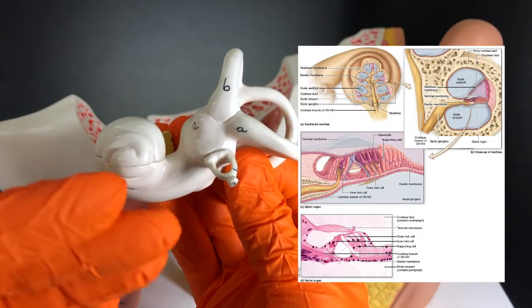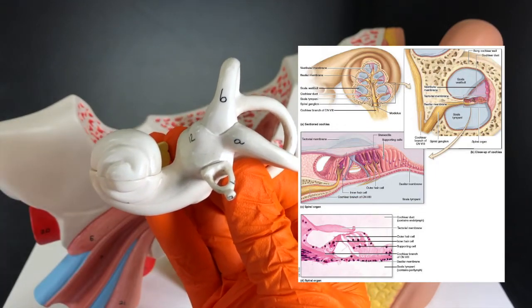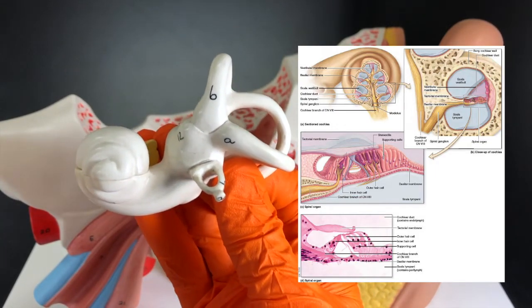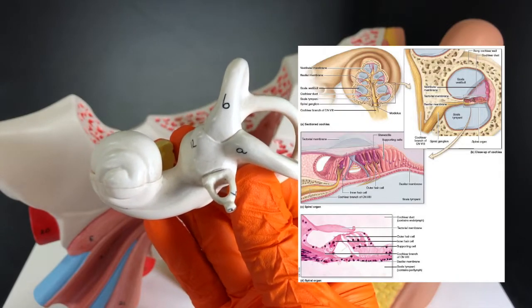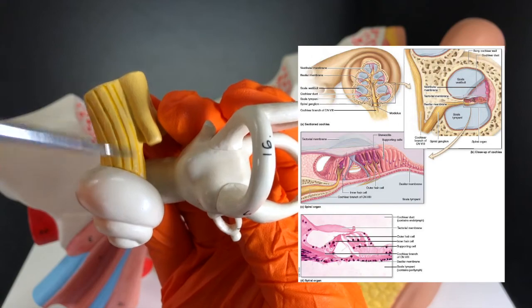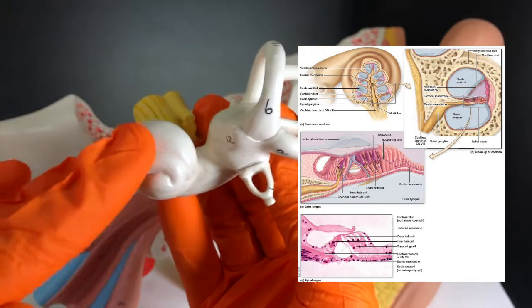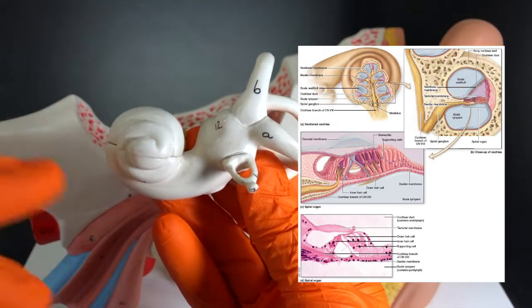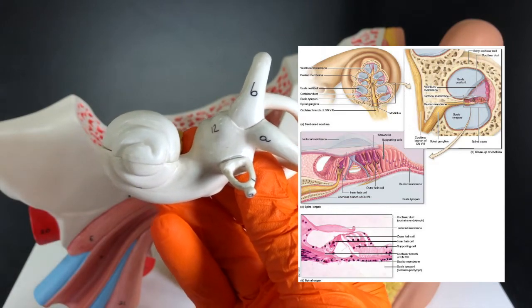That will eventually transmit that signal within the organ of Corti or the spiral organ to the vestibulocochlear nerve—the cochlear branch specifically—because that is what is connected to this area.